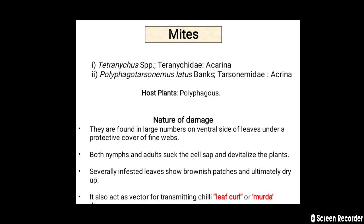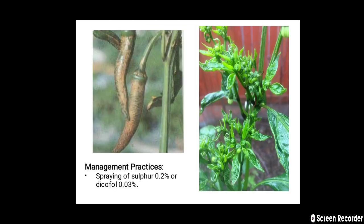Nature of damage: mites are found in large numbers on the ventral side of leaves under a protective cover of fine webs. Both nymphs and adults suck cell sap and devitalize the plants. Severely infested leaves show brownish patches and ultimately dry up. Mites also act as a vector for transmitting chili leaf curl or murda disease.